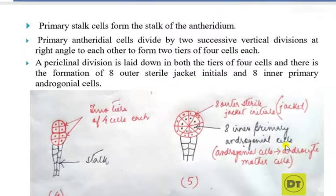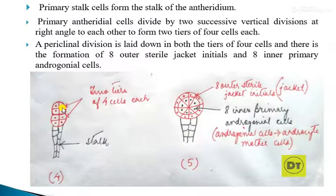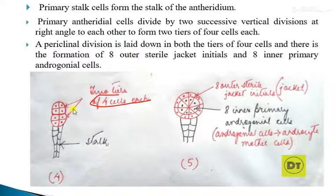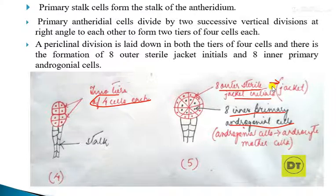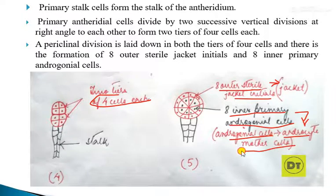The primary antheridial cells undergo successive vertical divisions at right angles to each other, forming two tiers of four cells each. Then a periclinal division occurs. As a result, there are 8 outer sterile jacket initials — marked in red — and inner primary antheridial cells. The sterile jacket initials develop to form a single-layer jacket, while the primary antheridial cells develop into androgonial cells, which later develop into androcyte mother cells.